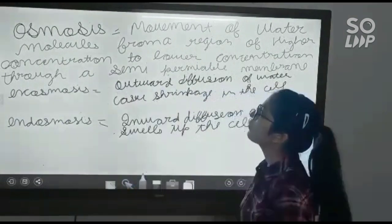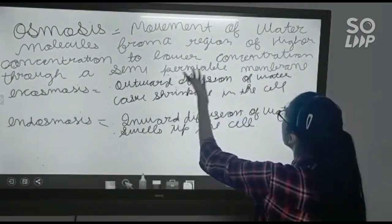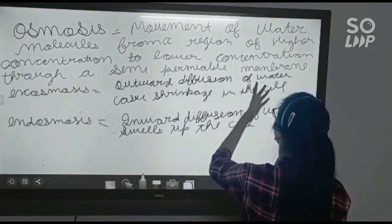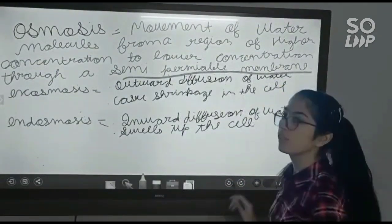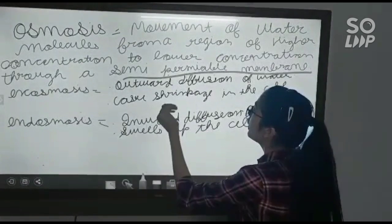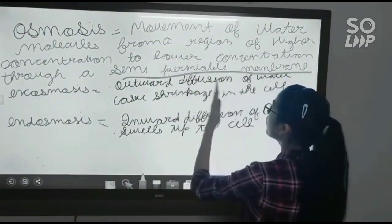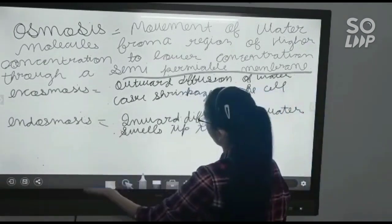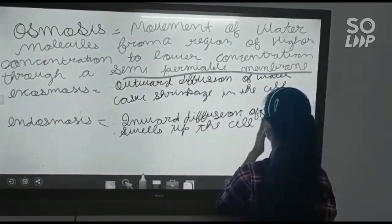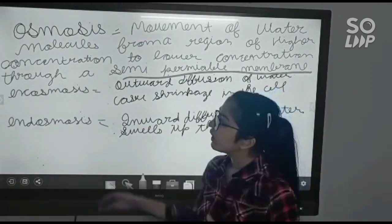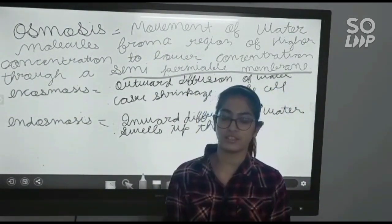Let's revise. Osmosis: movement of water molecules from a region of high concentration to a region of lower concentration through a semi-permeable membrane. Exosmosis: outward diffusion of water causes shrinkage in the cell. Endosmosis: inward diffusion of water swells up the cell. If you haven't understood, just take the example of a balloon. Thank you.